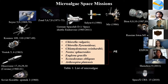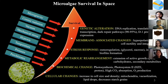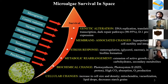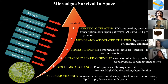What are these space conditions? They include microgravity, high cosmic radiation, vacuum, mechanical stress, hypoxia, extreme range of temperature and pressure, and perchlorates, which are present in the soil of different planets.